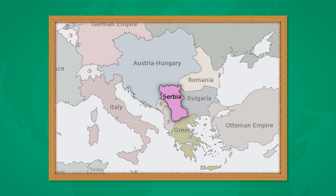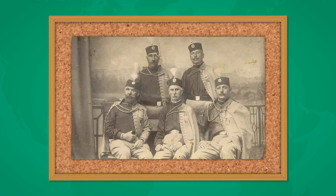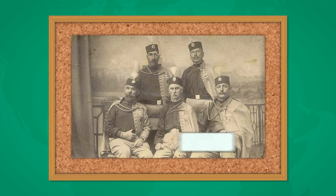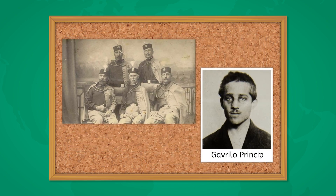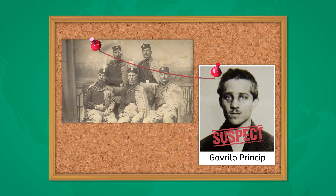Tensions between Serbia and Austria-Hungary grew. Serbia vowed to reclaim Bosnia and Herzegovina while Austria-Hungary was determined to prevent this by any means necessary. Nationalist groups with radical members began forming in Balkan states to oppose Austrian imperialism. The Black Hand, for example, was a secret nationalist society based in Serbia. One member of the radical group was Gavrilo Princip, a Bosnian Serb who fervently opposed Austro-Hungarian rule in the Balkans and wanted to unite the South Slav peoples into a single nation.